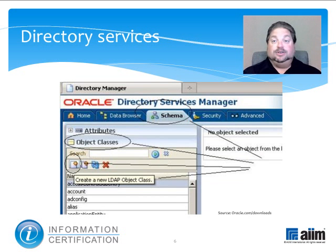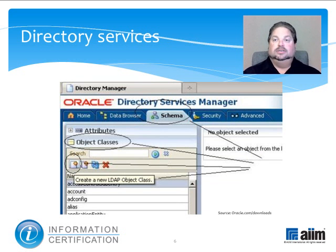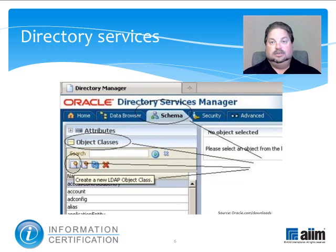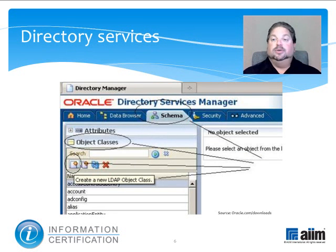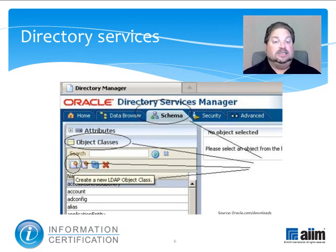A directory service identifies all resources on a network and makes them accessible to users and applications. Resources include email addresses, computers, and peripheral devices like printers and scanners. Ideally, the directory service should make the physical network topology and protocols transparent, so a user on a network can access any resource without knowing where it is or how it's physically connected.